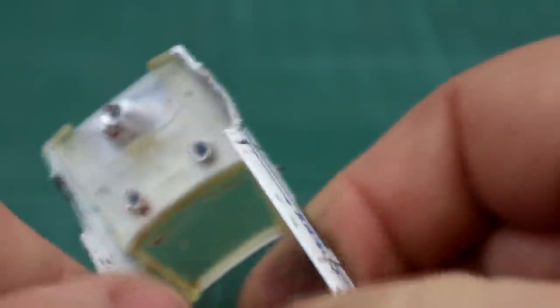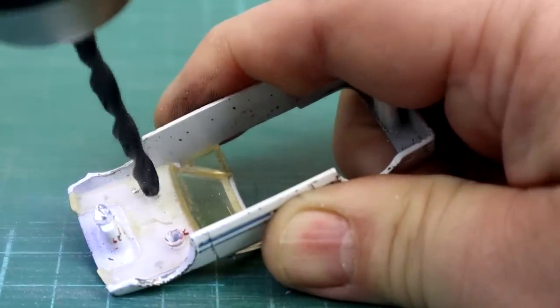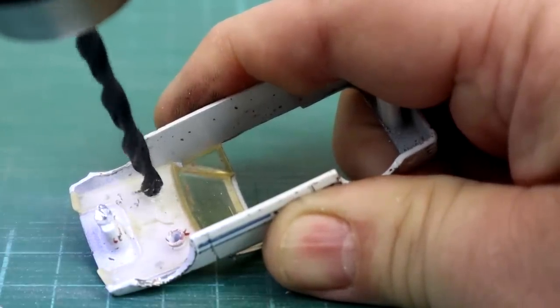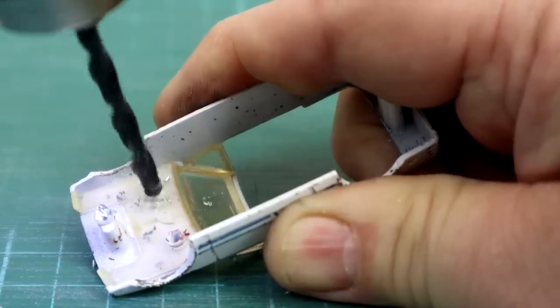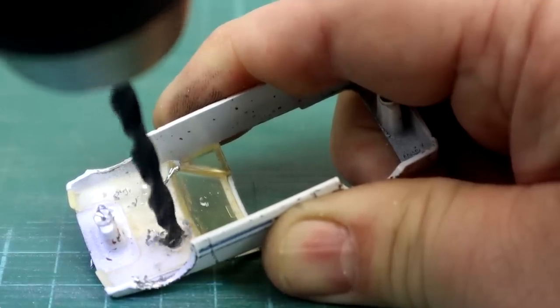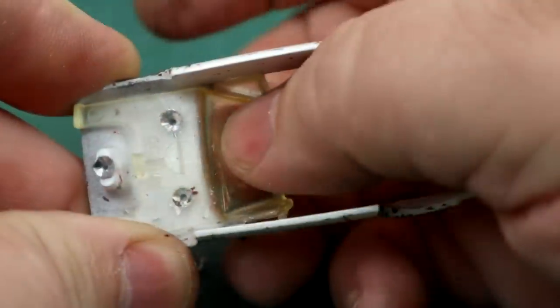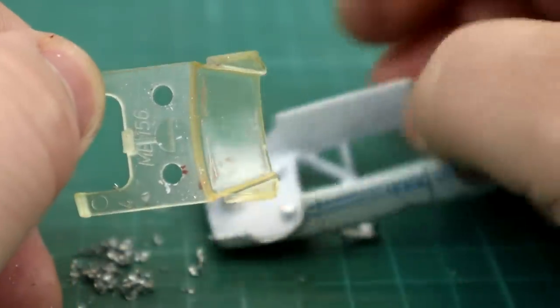The windshield is held in by these two rivet posts. Again, you've got to be very careful with these, and you'll see the benefit of a sharp drill. Look how slow I'm going there to get them little posts off. And, again, you don't want to drill too deep here. You don't want to go through the bonnet, so just take your time. And don't forget, this glass is very fragile. So, just a little ping, and out it comes.